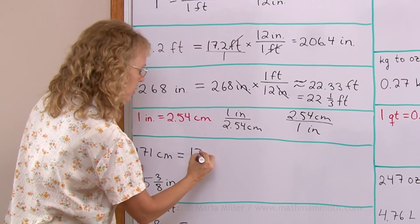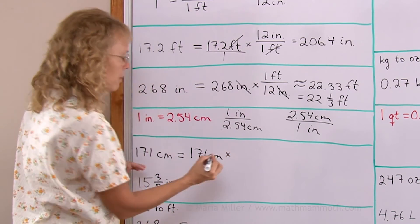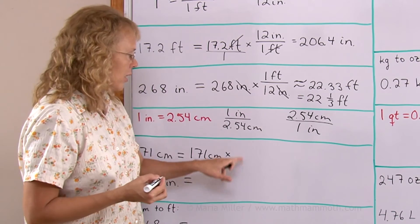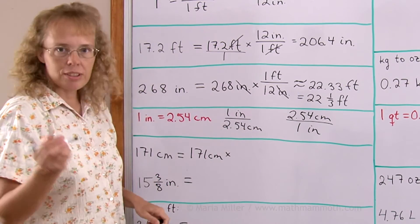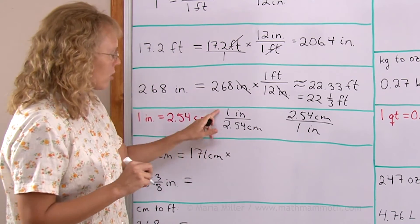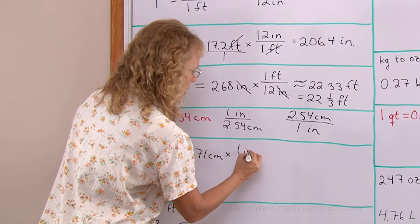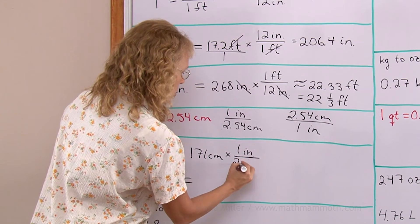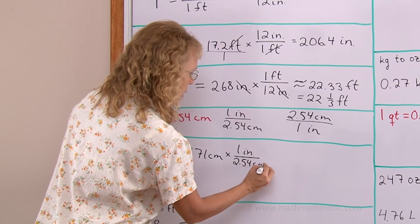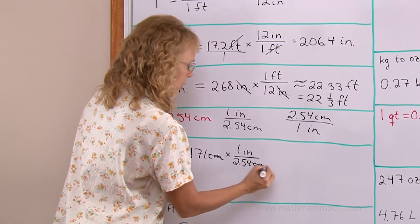And so over here, I take 171 centimeters and multiply it by 1, either by this or this. I want the centimeters to be in the denominator, so I'll choose this one: 1 inch over 2.54 centimeters. And now the centimeters cancel out.